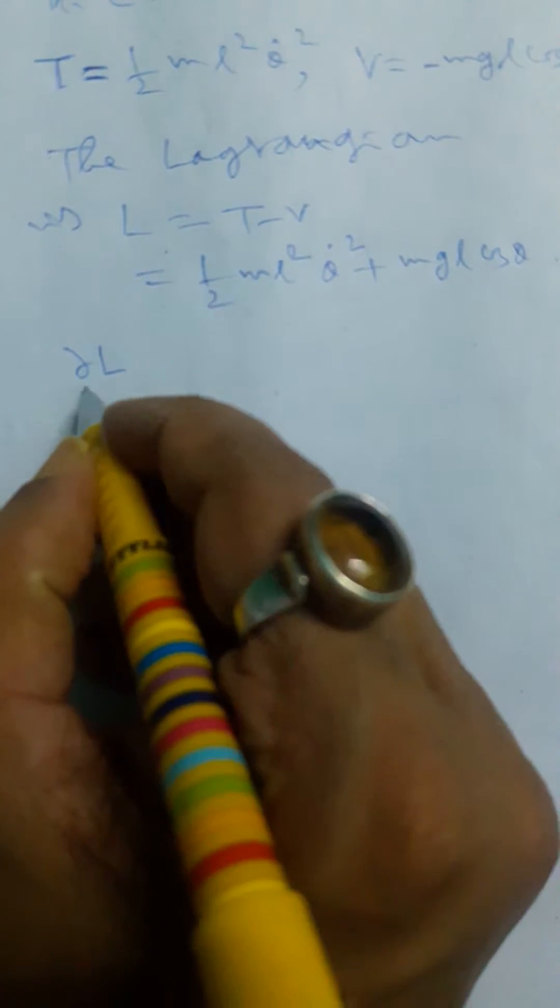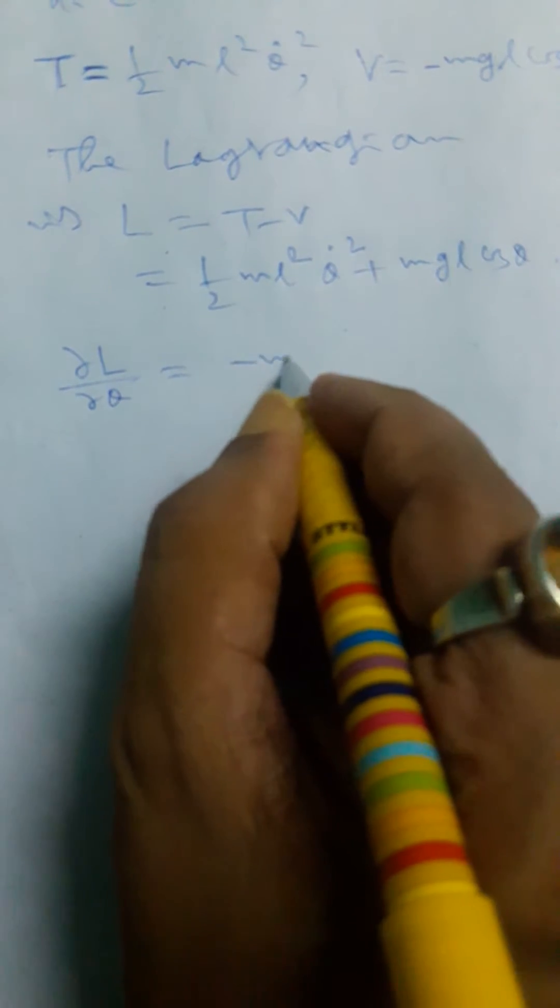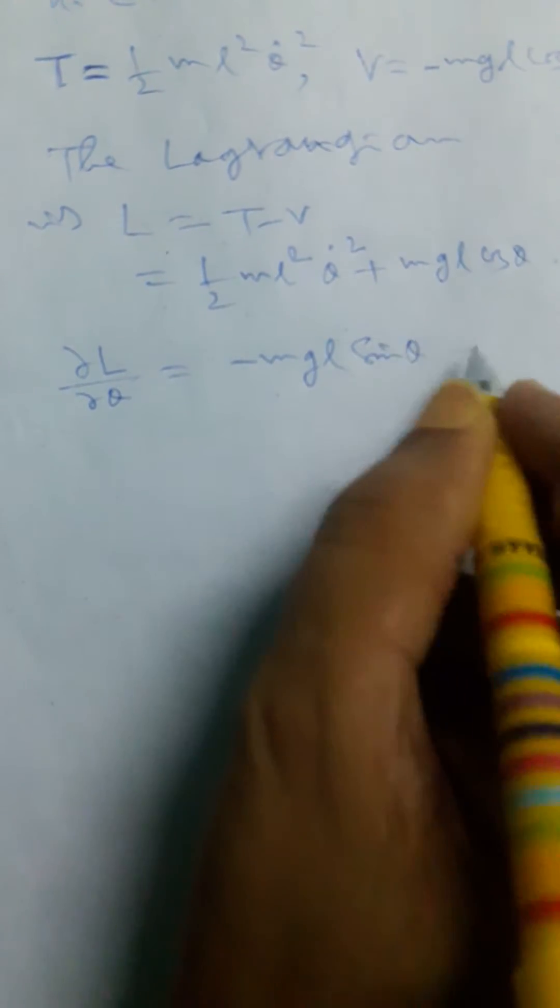Now we set up that yields. So we have to find taking partial derivative with respect to theta: ∂L/∂θ, that will be clear. It's zero and derivative of cos theta minus MgL sin θ.